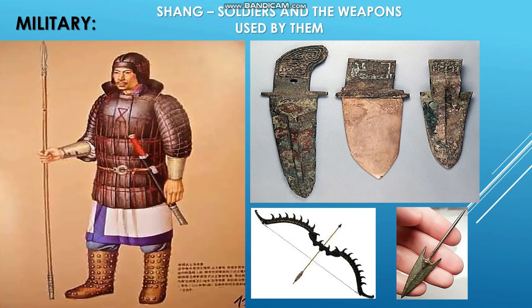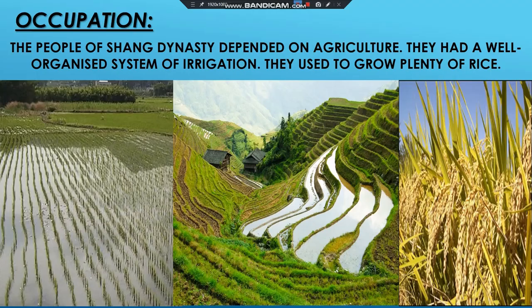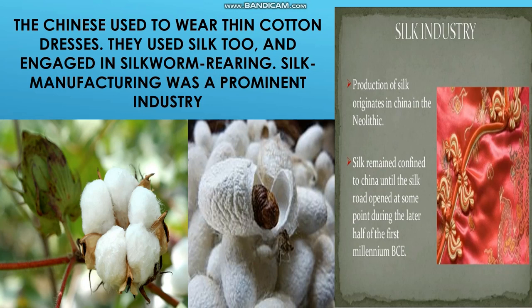The Shang kings spent a considerable amount of time in conquest and battles, so the army was prominent. Soldiers enjoyed a dignified place in society; they wore bronze helmets and metal armor, and used bronze daggers, axes, bows, and iron-tipped arrows. The main occupation of Chinese civilization was agriculture. The people of the Shang dynasty depended on farming, had a well-organized irrigation system, and grew plenty of rice.